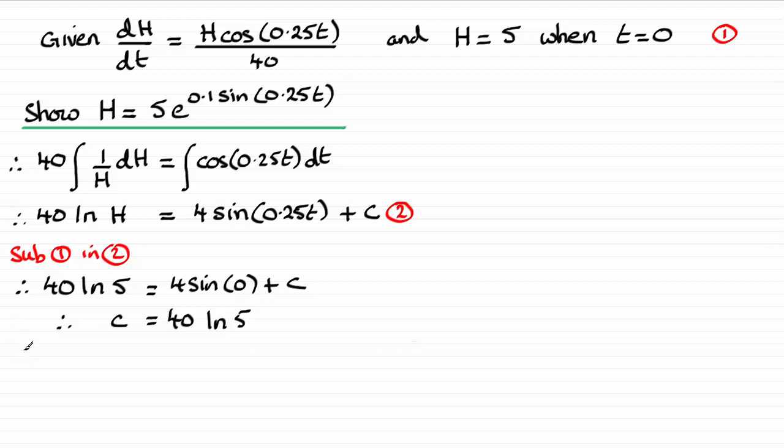And I want to substitute this back into equation 2. And what does that give us? Well we therefore have 40 times the natural log of H equals 4 sine of 0.25t plus that constant which turns out to be plus 40 times the natural log of 5. And as I said before if you put the constant C on this side done the same thing you would have found that that C would have turned out as negative 40 times the natural log of 5. So it makes no difference in the end.